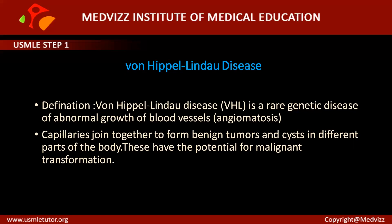In this disease, capillaries join together to form benign tumors and cysts in different parts of the body, typically in the brain. These benign tumors have the potential for malignant transformation. The key pathology in Von Hippel-Lindau is abnormal growth of blood vessels, which is called angiomatosis.